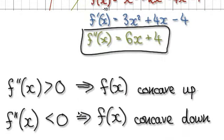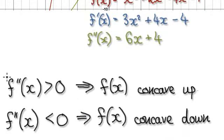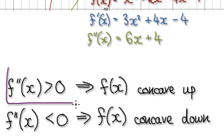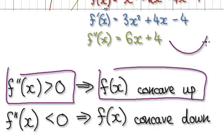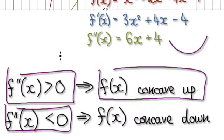When the second derivative is greater than 0, we say that the original function f of x is concave up — it would do this. When f double prime of x is less than 0, the original function would concave down.